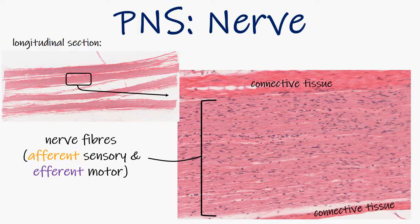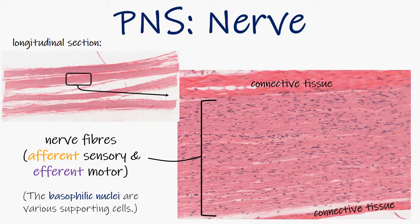There are also a lot of basophilic nuclei, and these are the nuclei of a vast number of cells, including Schwann cells, fibroblasts, and other supporting cells. You would need to use special stains to distinguish these cells.